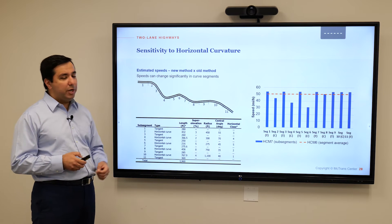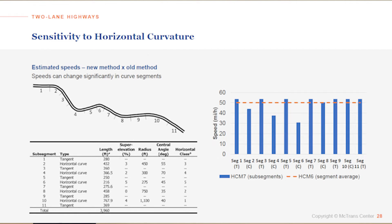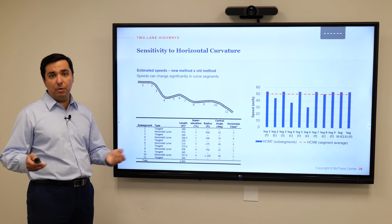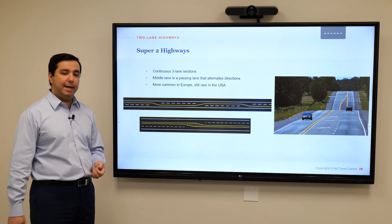That graph I'm showing on the right side of the screen illustrates how HCM 6 and HCM 7 methods go about estimating speed. The old HCM 6 method would just produce one estimation across the entire segment — that is the orange dotted line, one number for the entire segment. When we look at HCM 7's prediction, we see much more resolution across the different sub-segments, which brings additional accuracy to our analysis.